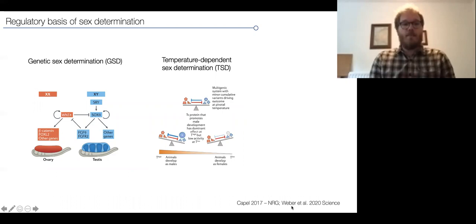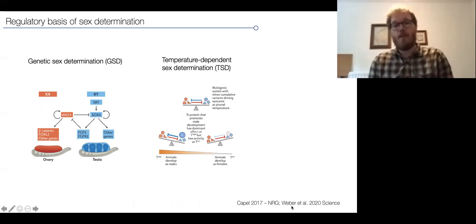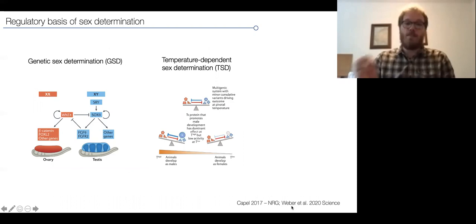About sex determination: the two extremes are when we have genetic sex determination, for example X, Y chromosomes as we have in humans, but also temperature-dependent sex determination where we have a hierarchical regulatory system that's affected by temperature. At low temperatures leads to female development, and at high temperatures to male development.